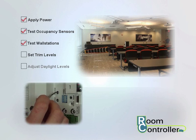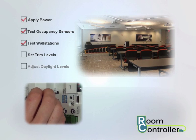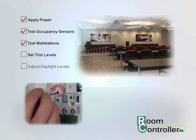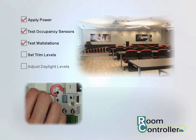Using a small screwdriver, twist the maximum trim dial counter-clockwise and then fully clockwise again. The lights will go full bright and the room controller will enter adjustment mode.